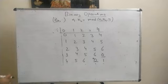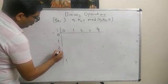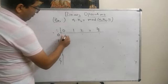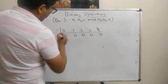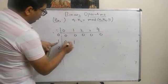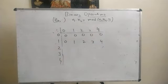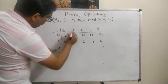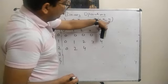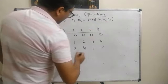For Z5 = {0,1,2,3,4} with modular multiplication by 5: the row for 0 is all zeros. Row for 1: 0,1,2,3,4 (all products less than 5). Row for 2: 0, 2, 4, then 2·3=6, mod 5=1; 2·4=8, mod 5=3. So row 2 is 0,2,4,1,3.